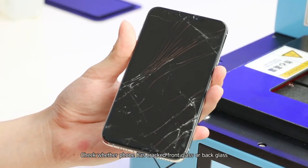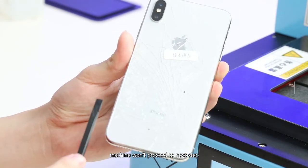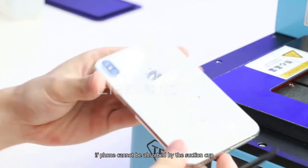Check whether the phone has cracked front glass or back glass. The machine will not proceed to the next step if the phone cannot be absorbed by the suction cup.